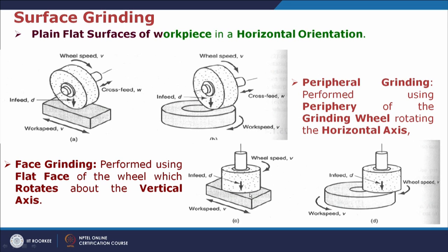Another type is face grinding, where the face of the wheel is being used for the grinding purpose. Here rotational movement is given to the grinding wheel and radial in-feed is given, while work pieces are reciprocated. Similarly, rotational movement is given to the work piece and radial in-feed is given to the grinding wheel for depth of cut, with additional rotational movement given to the work piece. So in both cases — face grinding or peripheral grinding — two types of motions are given to the work piece: reciprocating movement and rotational movement, while the grinding wheel has rotational movement and in-feed.